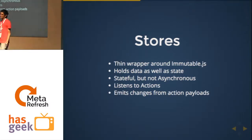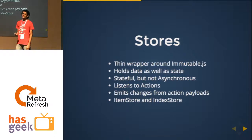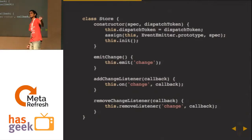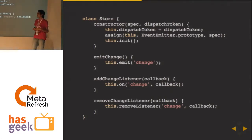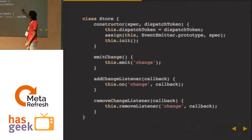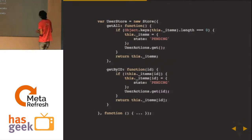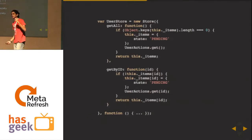Stores listen to the dispatcher for events and emit changes. For our implementation, you need an item store and an index store — think of those as your simple models and collections. A store is instantiated by a specification and a dispatcher callback — the same callback called on every action that goes through. Stores need to get all actions from the dispatcher, so stores have a callback and a simple specification.